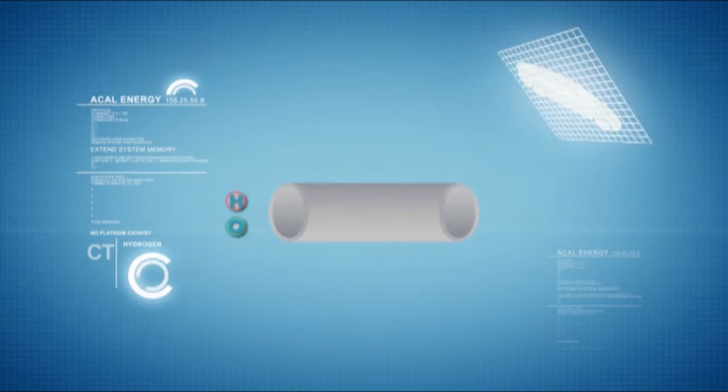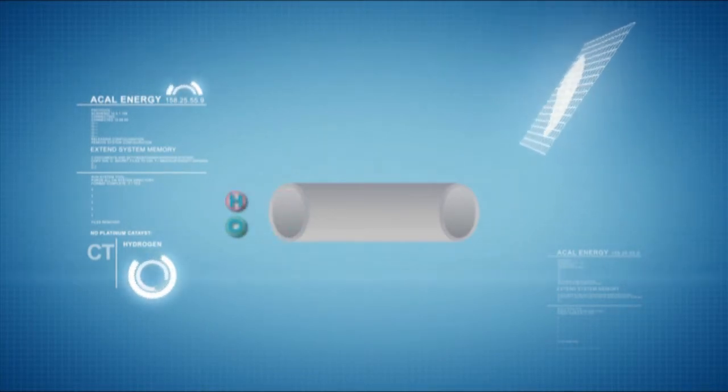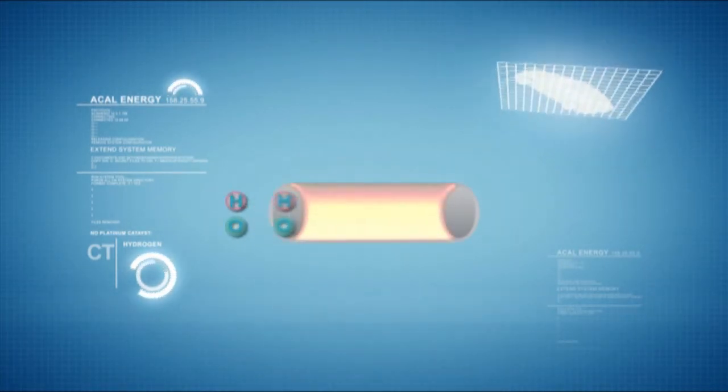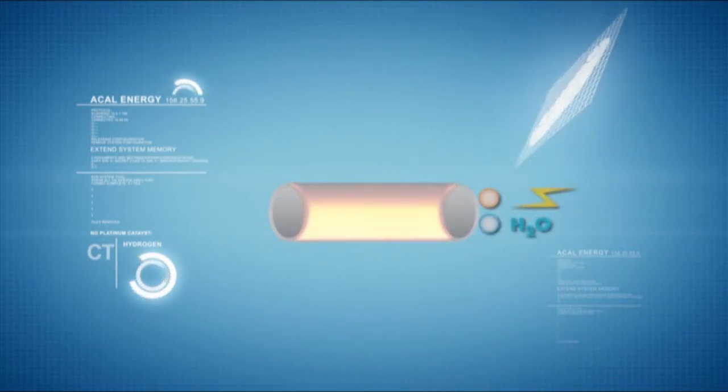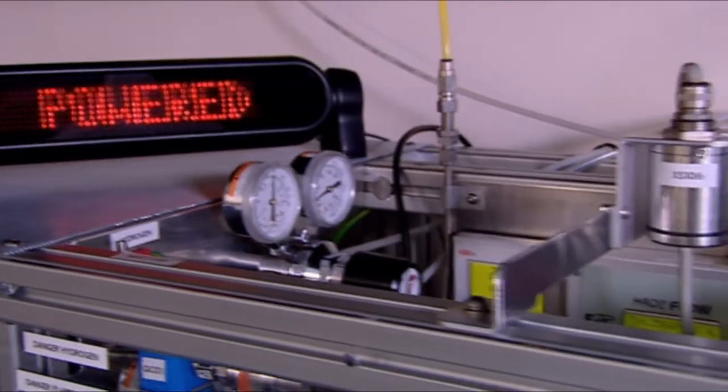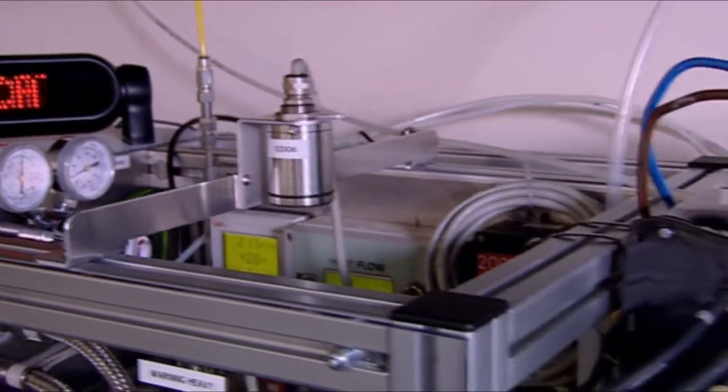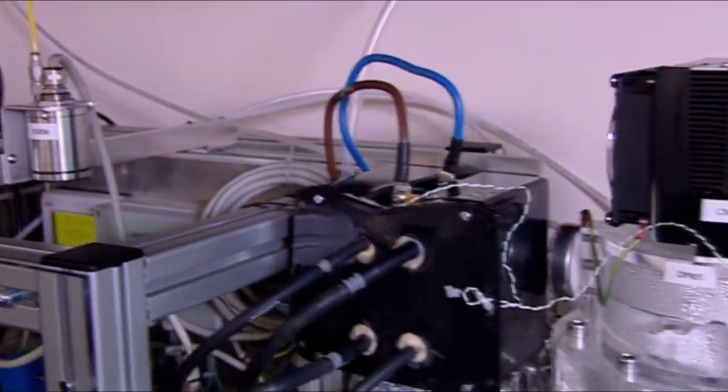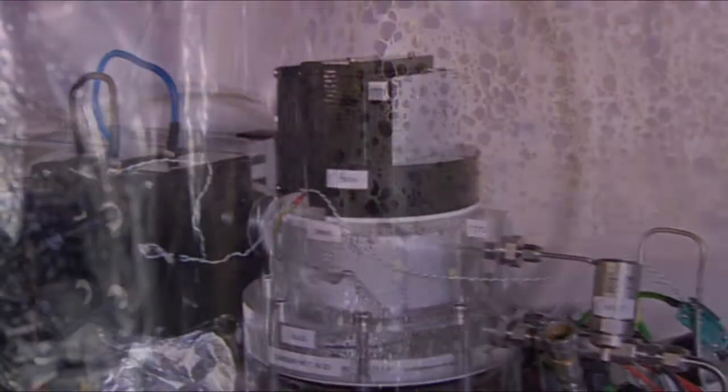Fuel cells are an ideal energy solution for the future because they provide continuous power. At the moment they are limited in output, but continued investment is changing the market. The base load of electricity that you need in a house is between one and two kilowatts. So we're building a one kilowatt electricity unit. The Carbon Trust are actually helping with that through their R&D programme.